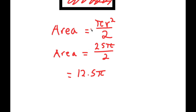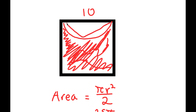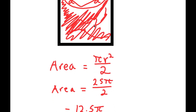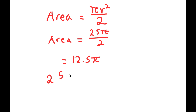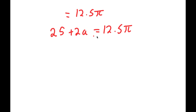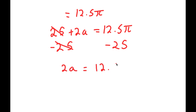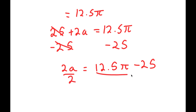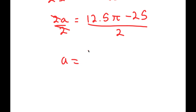Now I can say that this region is a and this region is also a, meaning 25 plus 2a is equal to 12.5π. To find the value of a, I subtract 25 from both sides — these cancel out — and get 2a equals 12.5π minus 25. Now dividing both sides by 2, these cancel out and I get a equals (12.5π minus 25) over 2.